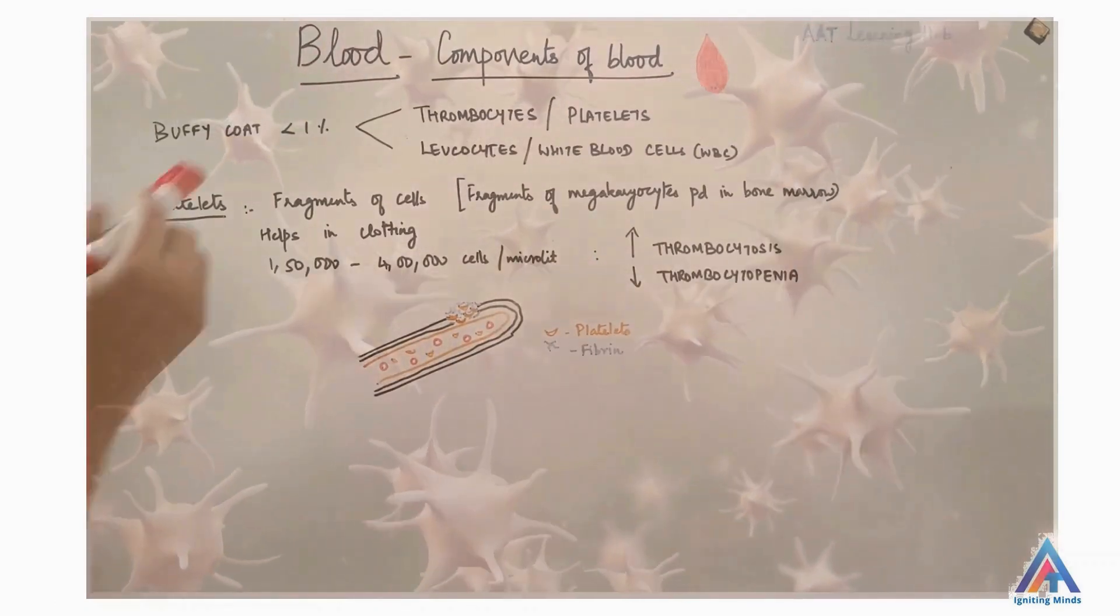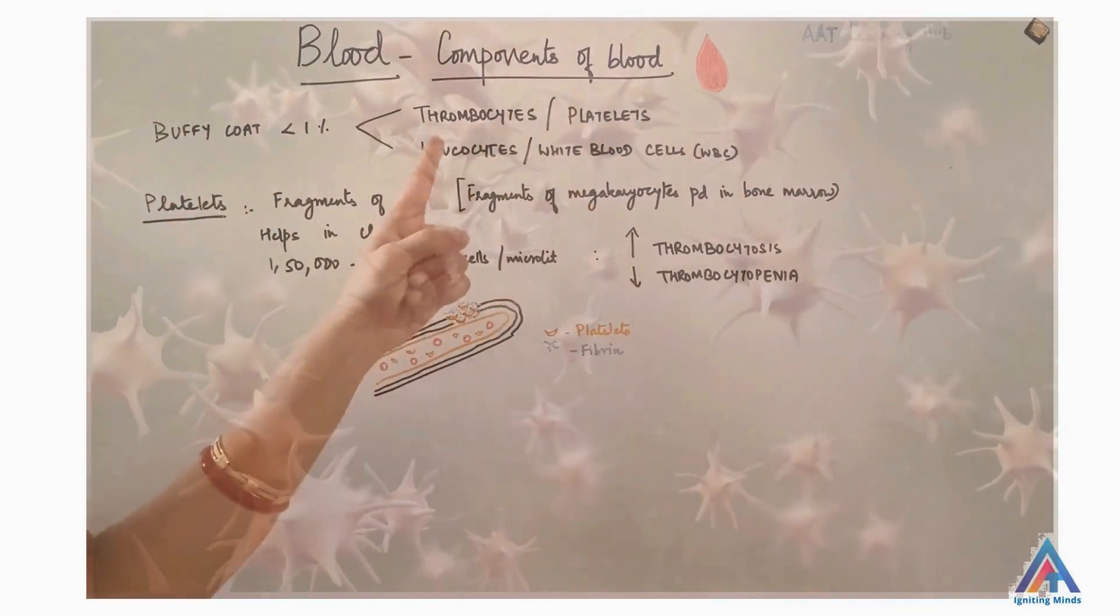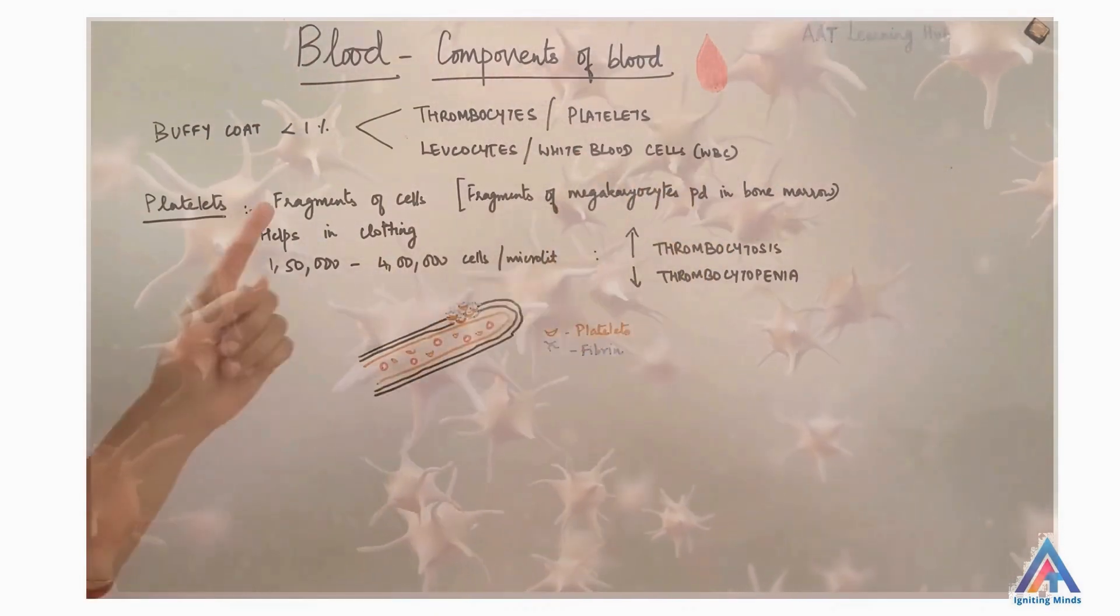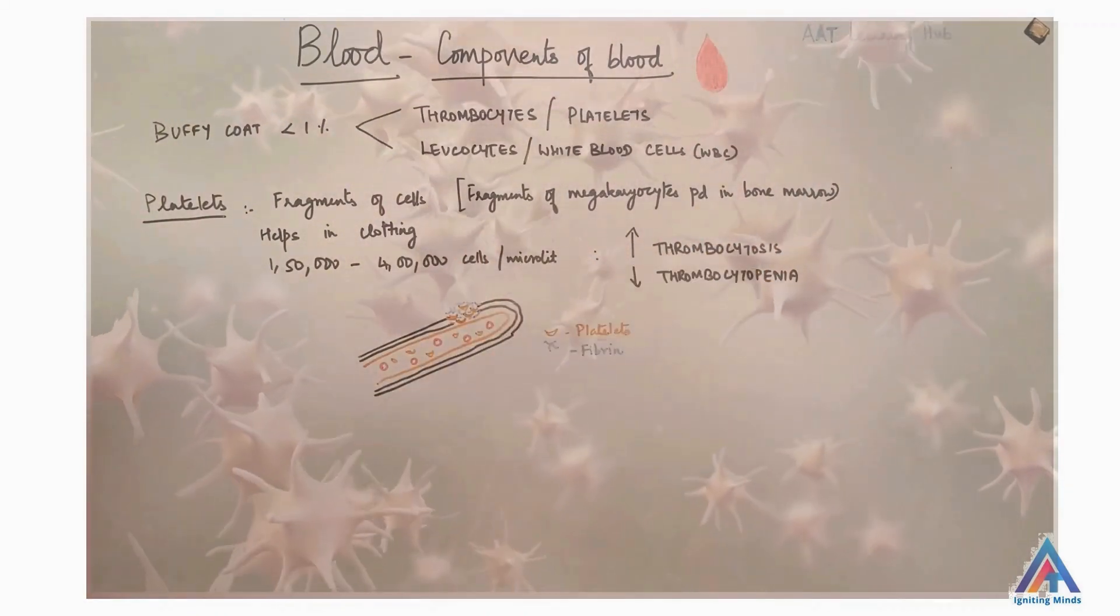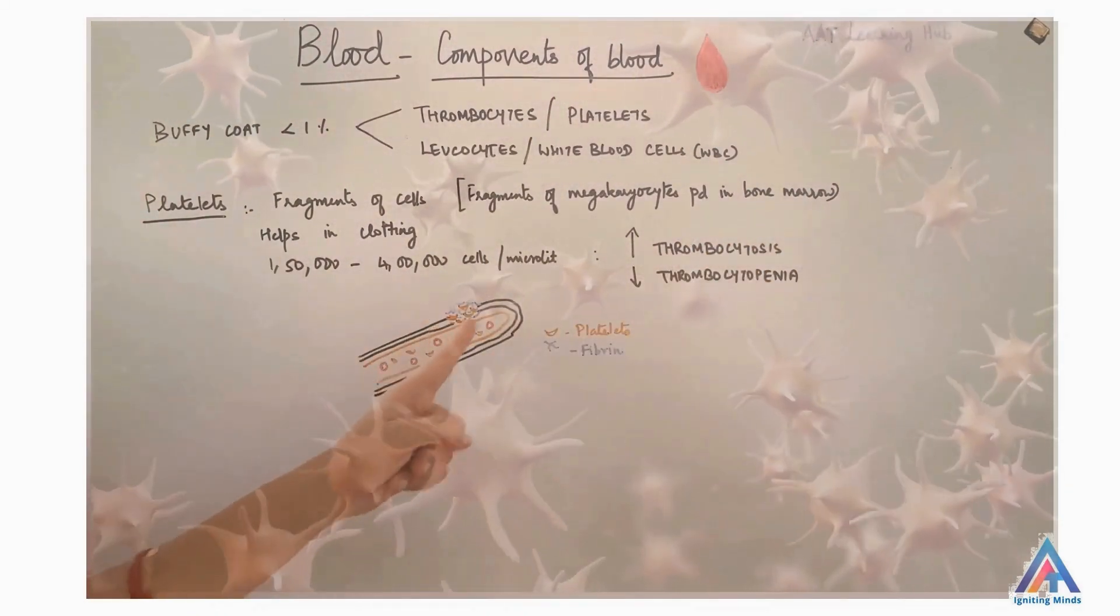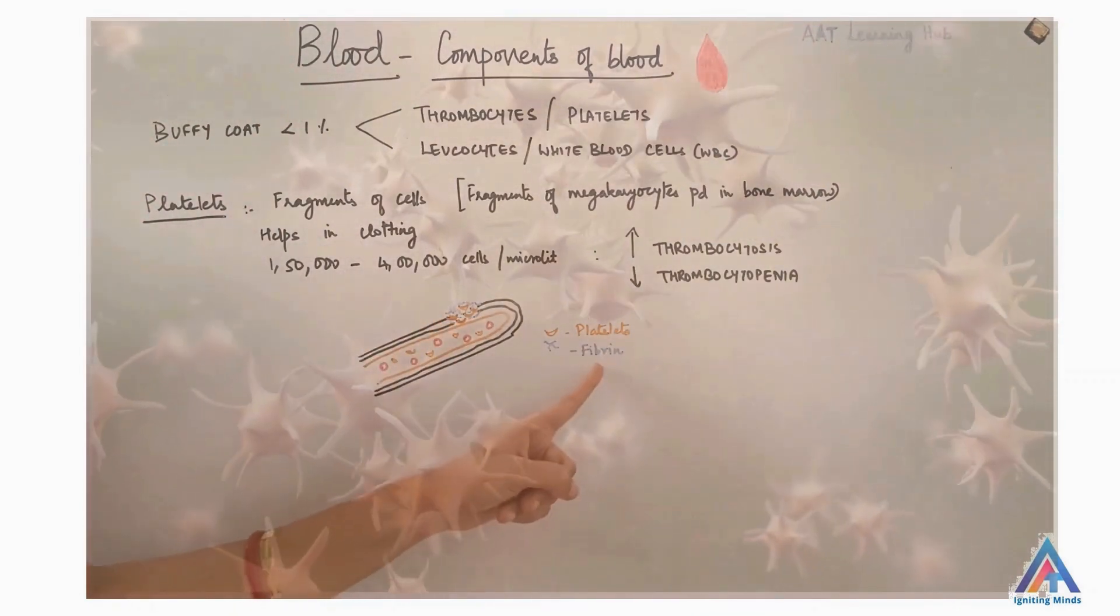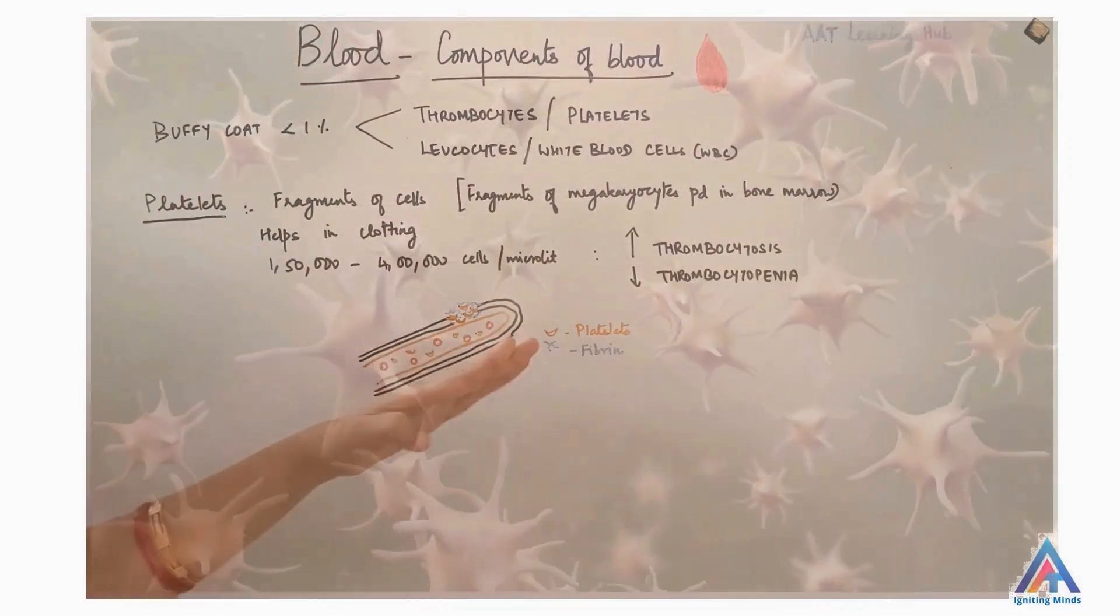Next we will move on to buffy coat. The components in the buffy coat are thrombocytes, otherwise called platelets, and leukocytes or the white blood cells. Platelets are fragments of cells that are produced in the bone marrow and they help in clotting. Any injury to blood vessel, platelets clump and form a plug and fibrin, which is a plasma protein, seals the plug and helps in clotting. This is called hemostasis.